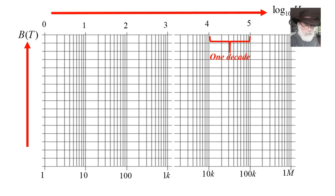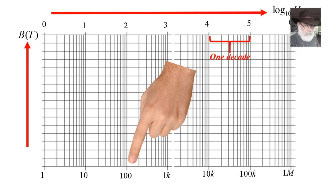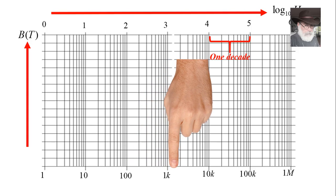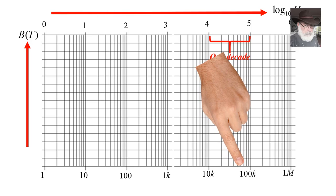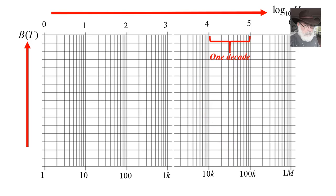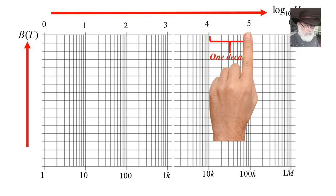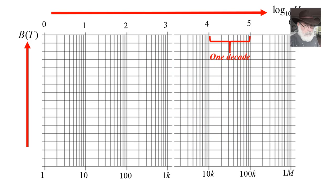Imagine we want to know how many decades away are 100 and 100,000. Well, you say the logarithm of 100,000, that is 5, minus the logarithm of 100, that is 2. 5 minus 2, that is 3 decades away. So it is true, the distance in decades between 100 and 100,000 is 3 decades.